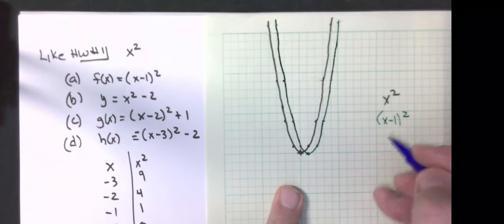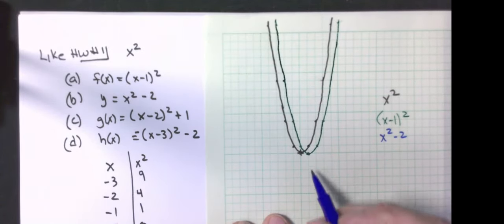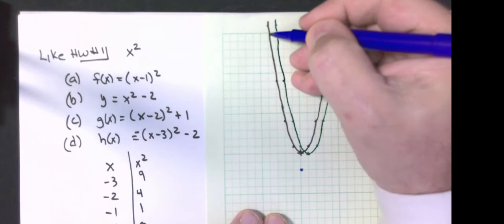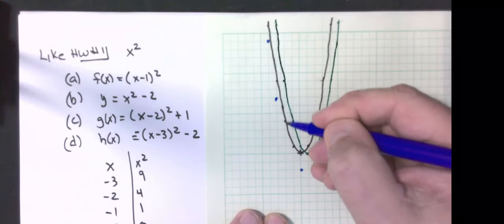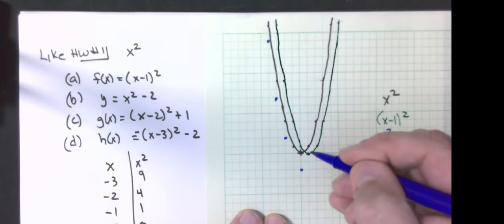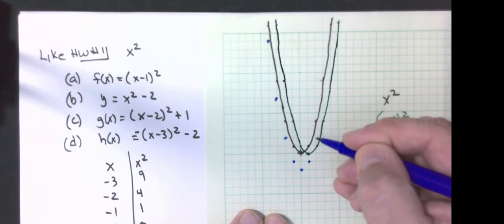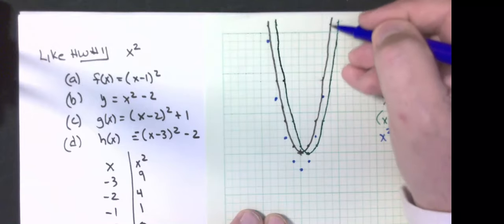Next one is x squared minus two. That says take my original graph and move everything two down. So I'm going to go down two. From here, I'm going to go down two. Go down two. Go down two. Down two from here. Go down two. Go down two. Go down two.